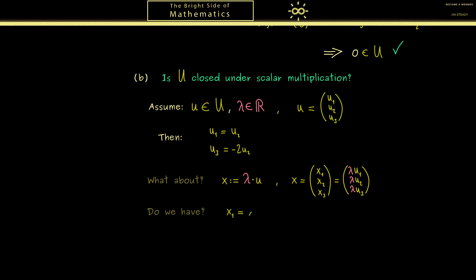Now the overall question is: are the 2 equations also satisfied for this new vector x? This simply means x₁ equals x₂ and x₃ equals minus 2x₂. Now of course we already know this is equivalent to a formulation with the components of u and lambda. More precisely this means λu₁ equals λu₂ and λu₃ equals minus 2λu₂. So we can simply use the fact that the components of x are given in this form. Therefore to answer this question, we have to go from these equations here to these ones.